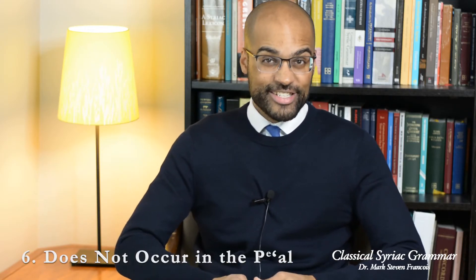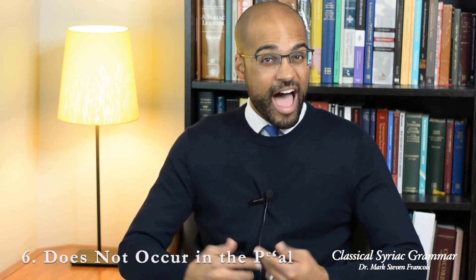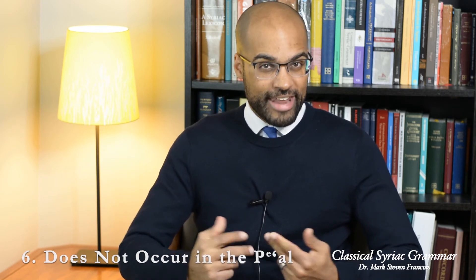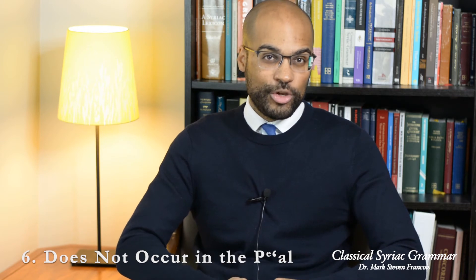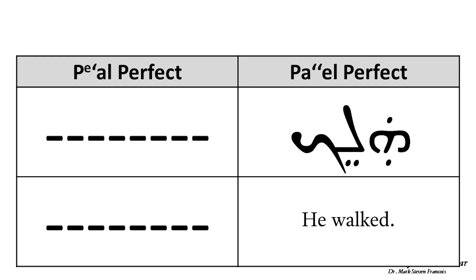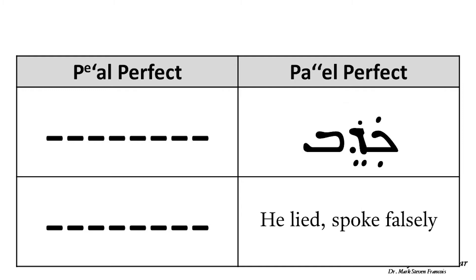Sixth, in some cases a verbal root used in the Pa'al either doesn't appear in the Pe'al at all, or only rarely does. When this happens, the verb in the Pa'al simply communicates a simple verbal idea. For example, 'shadar' means 'he sent' — there is no corresponding Pe'al form. 'Halech' means 'he walked' in the Pa'al perfect. And 'kadev' means 'he lied' or 'he spoke falsely' in the Pa'al perfect.